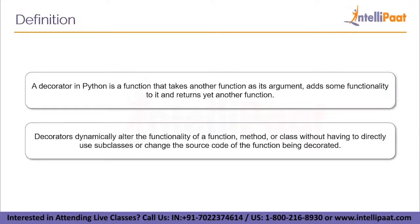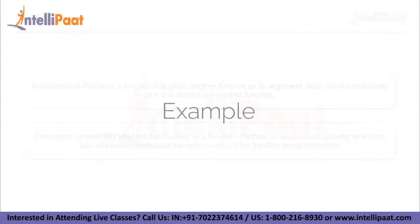Definition. A decorator in Python is a function that takes another function as its argument, adds some functionality to it, and returns yet another function. Decorators dynamically alter the functionality of a function, method, or class without having to directly use subclasses or change the source code of the function being decorated. To better understand this, we'll be taking a look at an example.